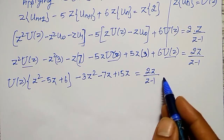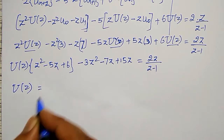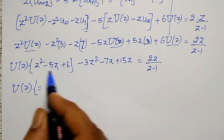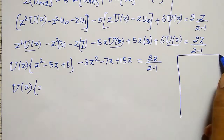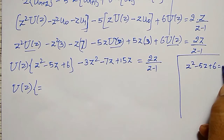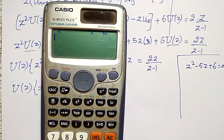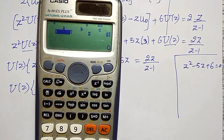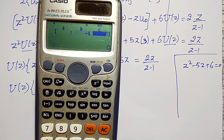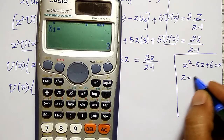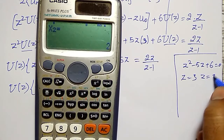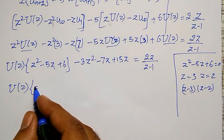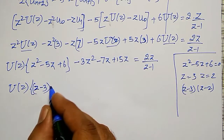I will shift remaining terms to the other side. The quadratic Z² minus 5Z plus 6 factors as follows: solving Z² minus 5Z plus 6 equal to 0 with A=1, B=minus 5, C=6, I get roots Z equal to 3 and Z equal to 2. Therefore Z² minus 5Z plus 6 factors as (Z minus 3)(Z minus 2).